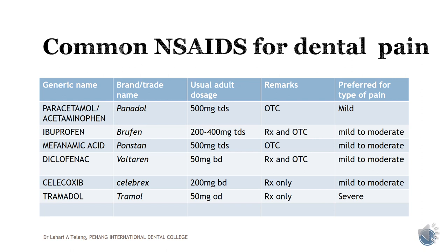Ibuprofen, trade name Brufen, is generally available as a 200 to 400 mg tablet given 3 times a day. It can be given as a prescription drug but sometimes can also be obtained over-the-counter. It is indicated for mild to moderate pain.